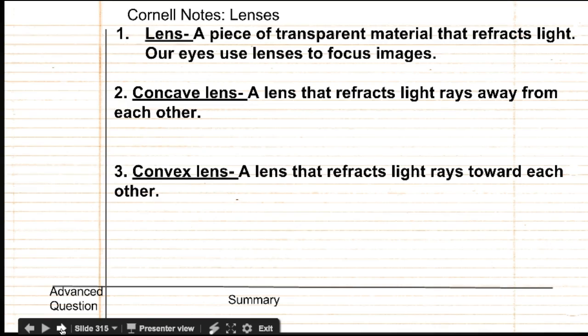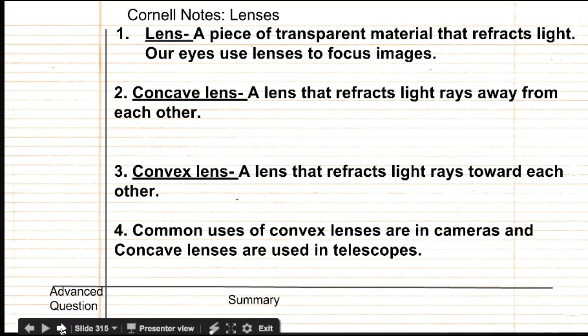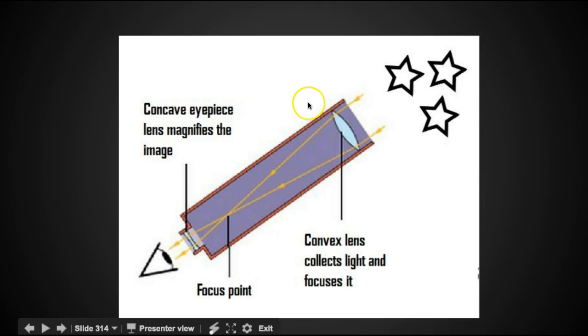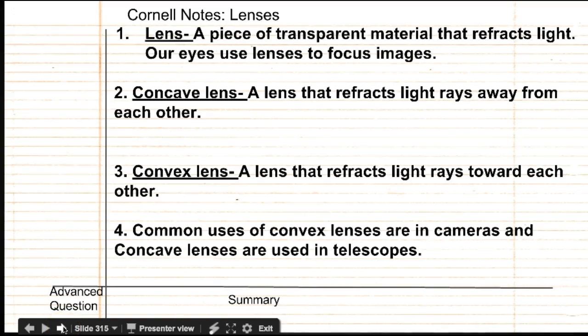Alright, so some common uses of convex lenses are in cameras, just like I showed you, and in telescopes as well. A telescope that is used to study stars actually uses a convex and a concave. The combination of both of them help magnify the light from the stars that is billions of miles away. So they both have uses in common tools like cameras and telescopes.